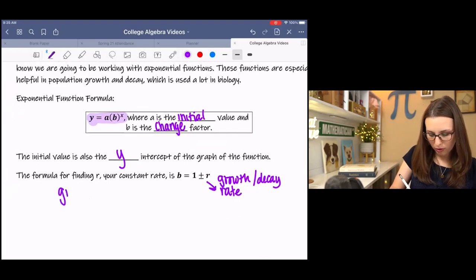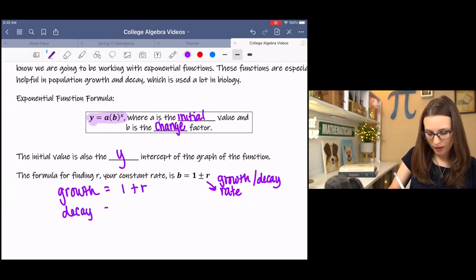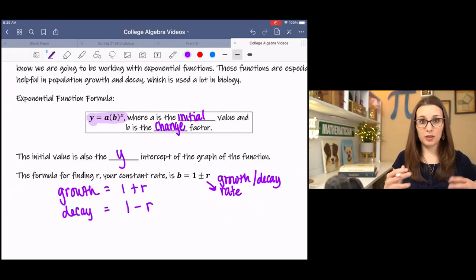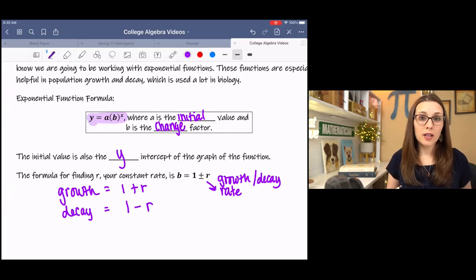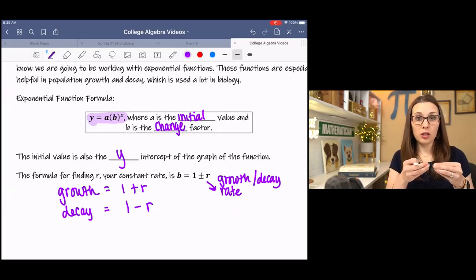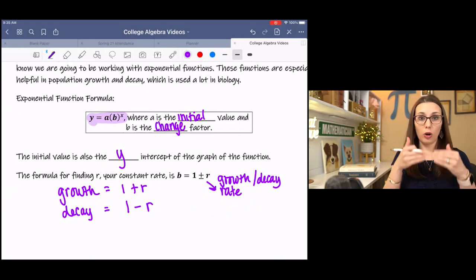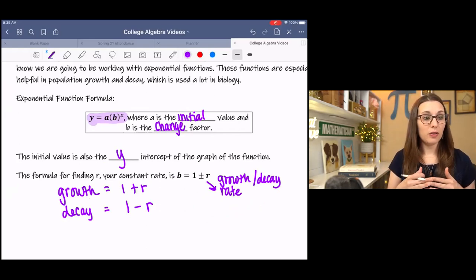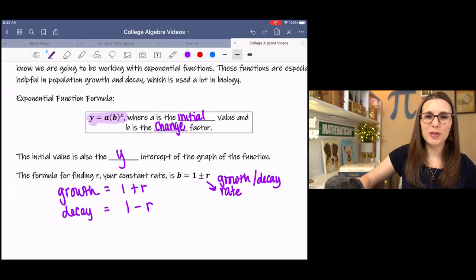And I have a video on that if you're unfamiliar with growth and decay. But for growth, that's going to be 1 plus r. And for decay, that's going to be 1 minus r because it's decreasing. The 1 indicates that first iteration. And then the r indicates the growth each time. So that's all I have for this lesson. If you have any questions, please let me know and I'd be happy to help. See you in the next one.